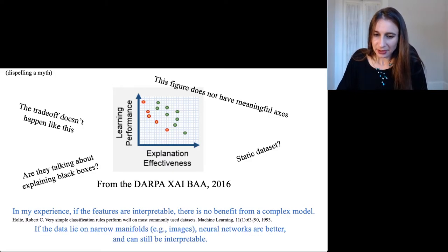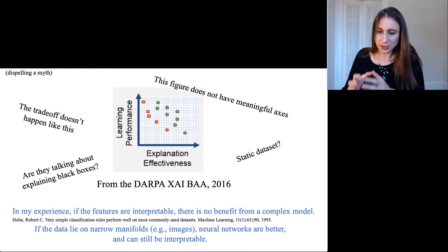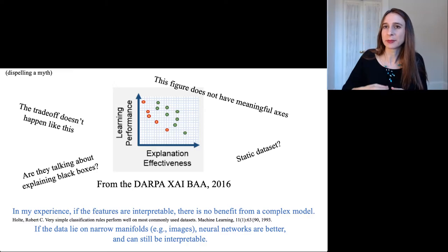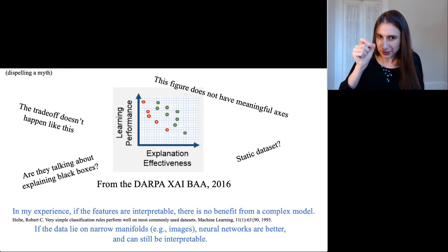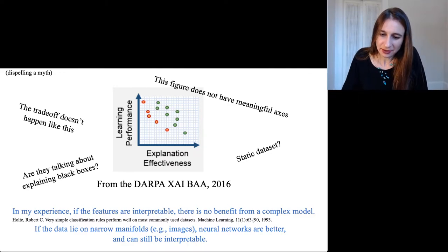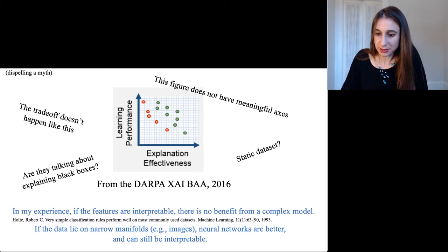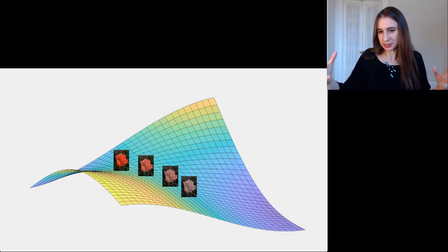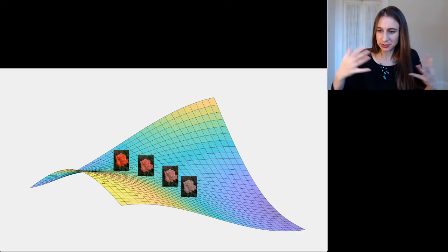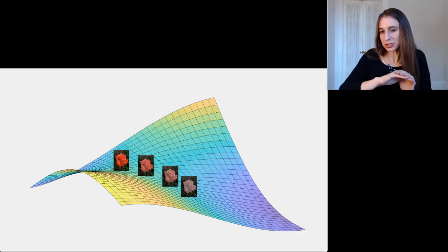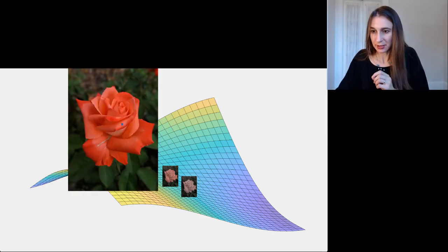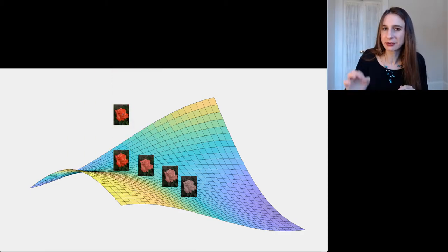On the other hand, if you have data that's very raw, like the kind of data where the features are like pixels or a tiny slice of time in a sound file, in those cases where the data lie on these narrow manifolds of feature space, neural networks tend to be better right now. But they can still be made interpretable, so the argument still doesn't hold. If you think about the feature space being pixel space and each image being a vector in this giant pixel space, then if you take an image that would occur in nature and you changed one pixel, the image is no longer a natural image and no longer lies on the manifold of natural images.